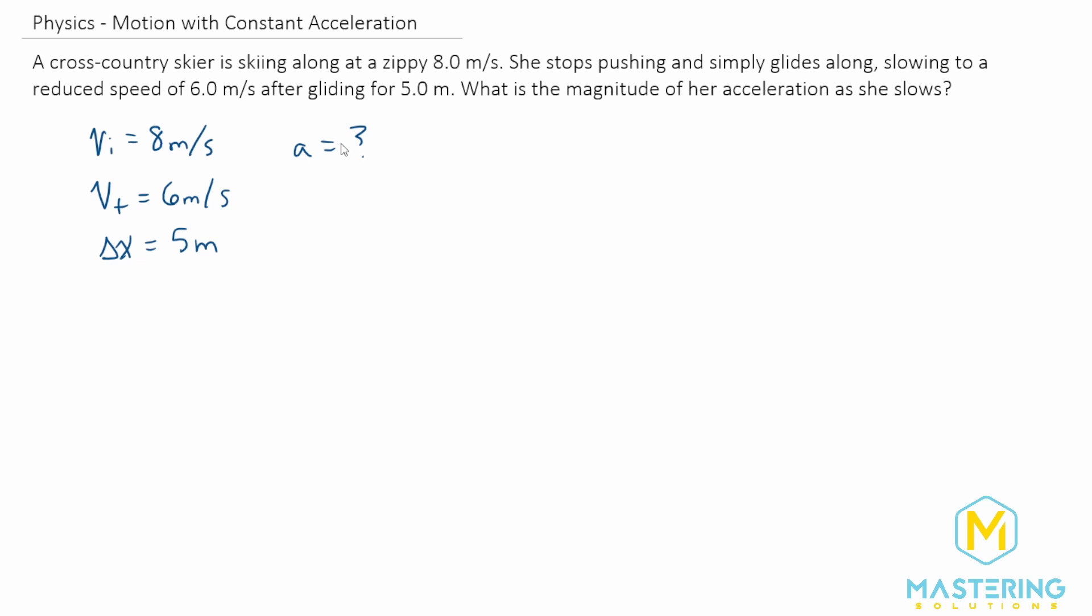So now when we look at the kinematic equations, we need one that has all of these variables in it. And fortunately for us, there is one. So we have v final squared is equal to v initial squared plus 2 times the acceleration times the delta x.